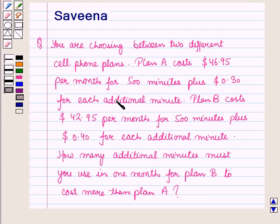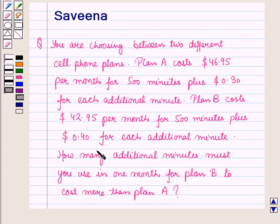Hello and welcome to the session. In this session we will discuss a question which says that you are choosing between two different cell phone plans. Plan A costs $46.95 per month for 500 minutes plus $0.30 for each additional minute. Plan B costs $42.95 per month for 500 minutes plus $0.40 for each additional minute. How many additional minutes must you use in one month for Plan B to cost more than Plan A?